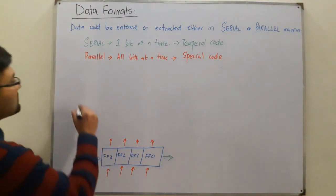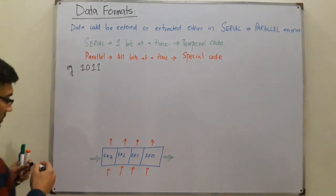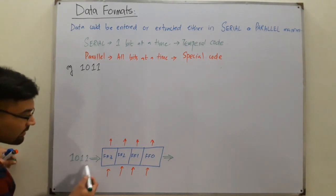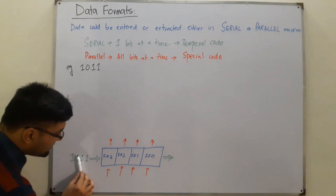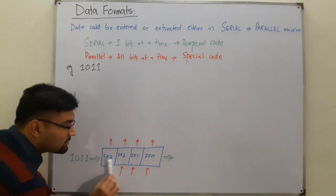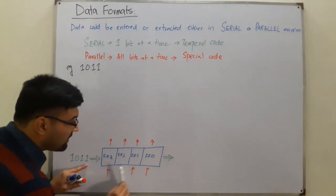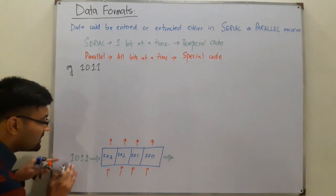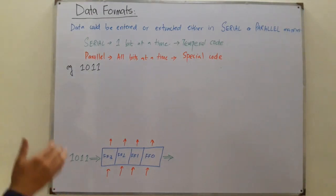For example, if you want to store the bit pattern 1011 in serial mode: the least significant bit is provided first into flip-flop three, then using the shift you shift it to flip-flop two, the next bit is provided at flip-flop three, then it shifts to flip-flop one, and the next to flip-flop two. In the next clock pulse, the LSB one shifts to flip-flop zero, the next to flip-flop one, zero to flip-flop two.